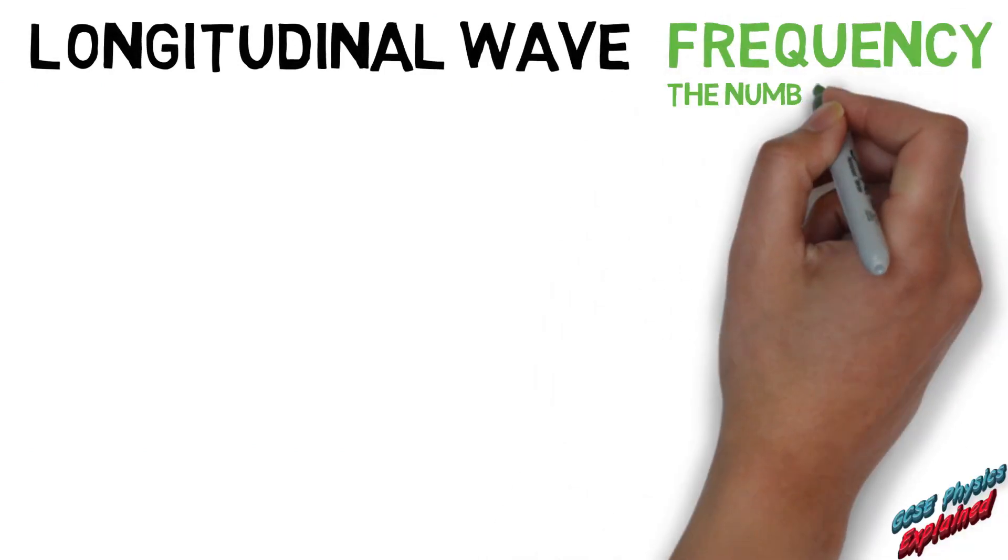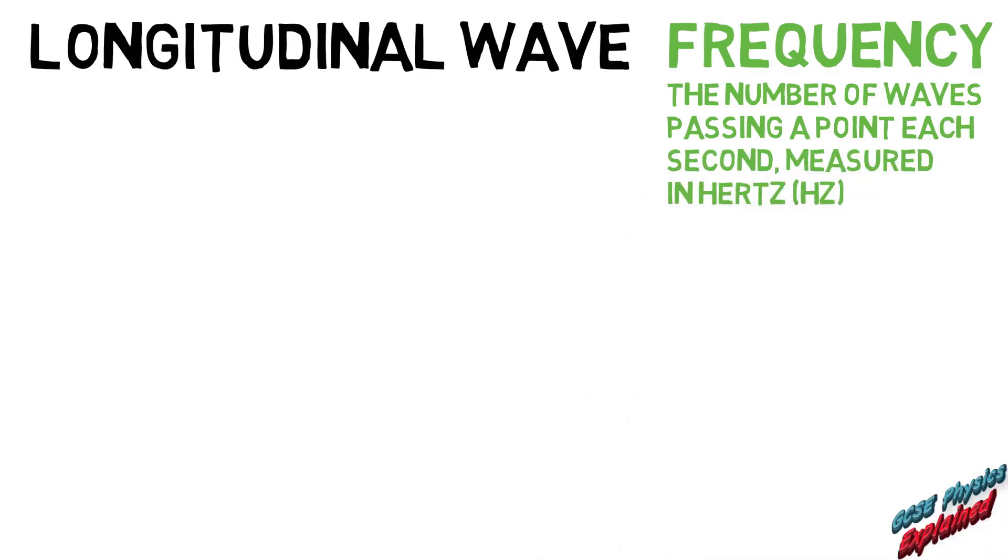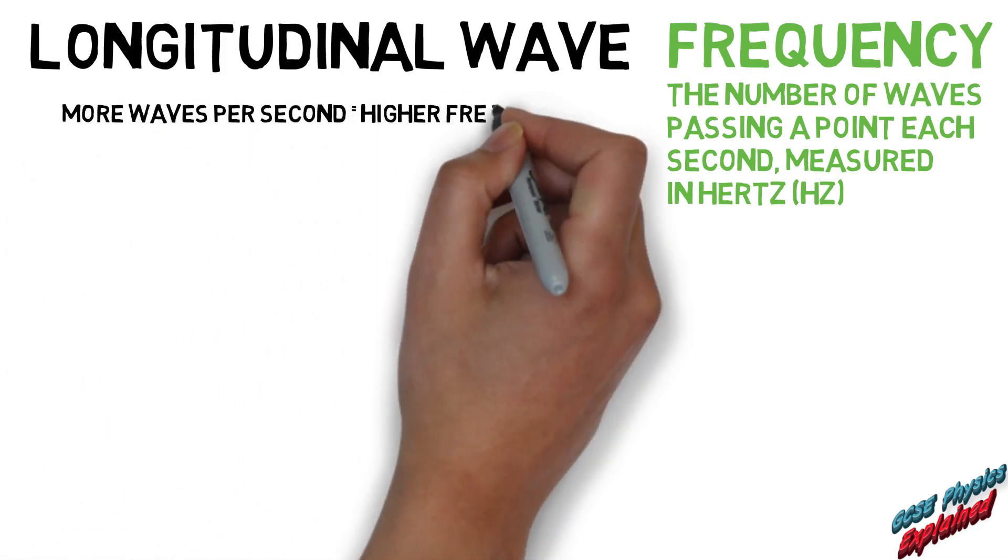The frequency is the number of waves passing a point each second, measured in hertz. It has the symbol F. More waves per second equals higher frequency.